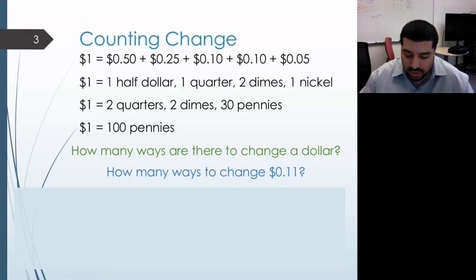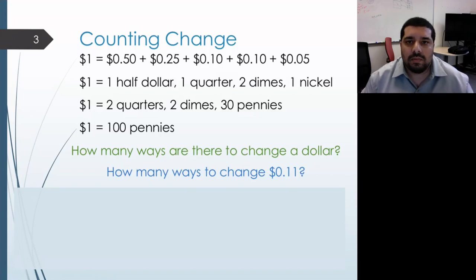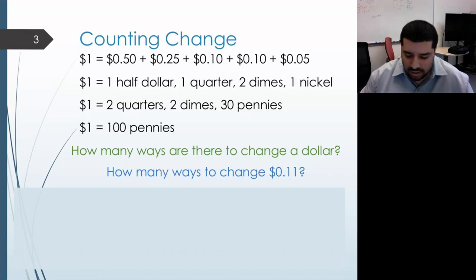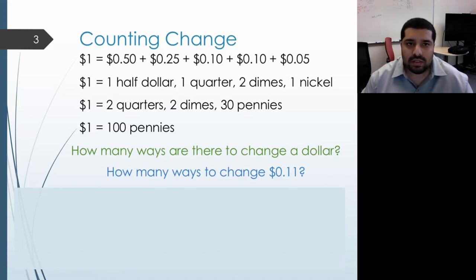In order to do this, it's really useful to draw out all the possibilities for some small example, and then figure out how to categorize them to come up with an algorithm that will work in the general case. With a dollar there are a lot of ways, so let's look at a simpler example: how many ways are there to make change for 11 cents. For 11 cents, the only coins we can use are dimes, nickels, and pennies.